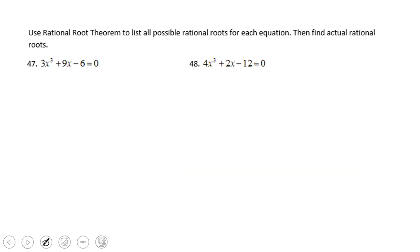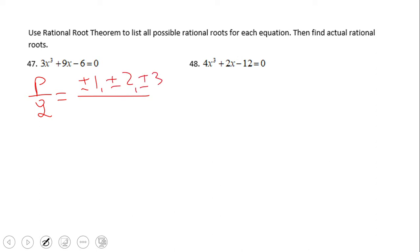Let's see two more examples. On this one, P over Q: we have plus and minus 1, plus and minus 2, plus and minus 3, and plus and minus 6 — these are the factors of 6. And down on the denominator we're going to put the factors of 3: plus and minus 1, plus and minus 3.